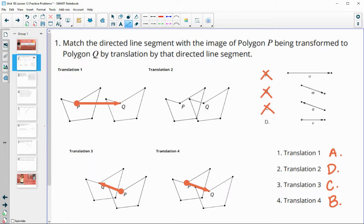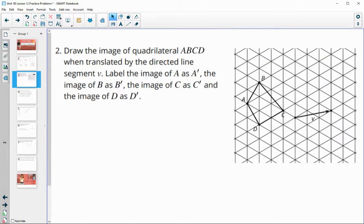And we can certainly take a look at it and see to make sure that we're right. So put this on P does map to Q. So we're good. Number two, draw the image of quadrilateral ABCD when translated by this directed line segment V.